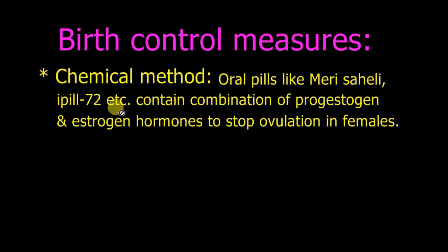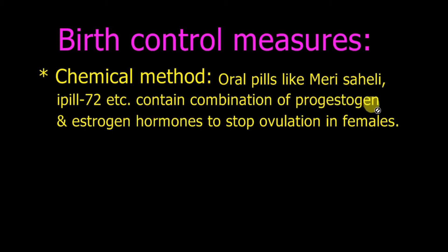Oral pills like Meri Saheli, iPill 72, and many others are available in the market. These contain a combination of female hormones such as progesterone and estrogen, or progesterone alone. These hormones stop ovulation in the female, making this an effective birth control method.